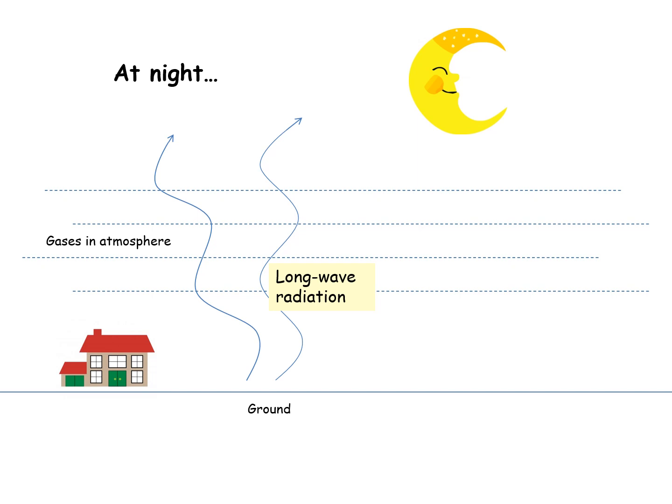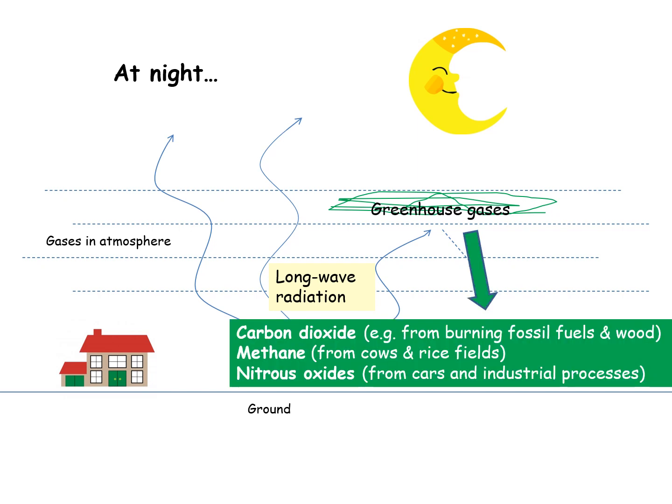Whilst most of this heat can escape into space, some of it is absorbed or trapped by greenhouse gases that reflect and keep the heat within the atmosphere. These greenhouse gases are things such as carbon dioxide or methane or nitrous oxides. We can also add water vapour and CFCs to this list.